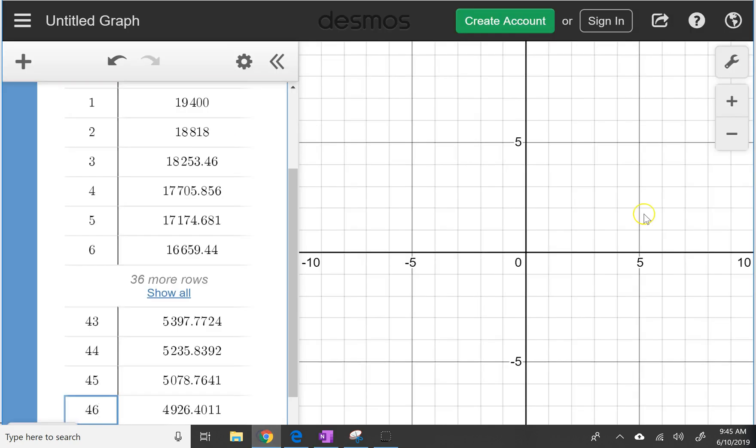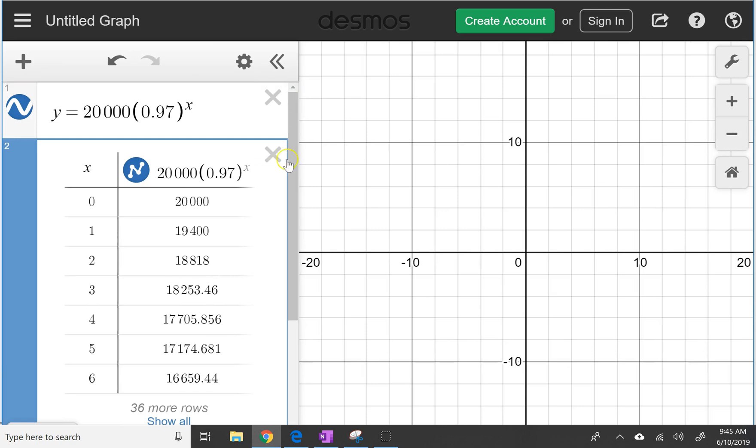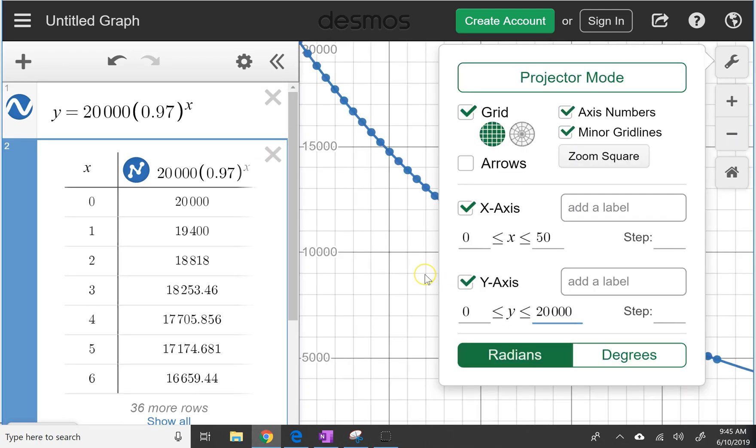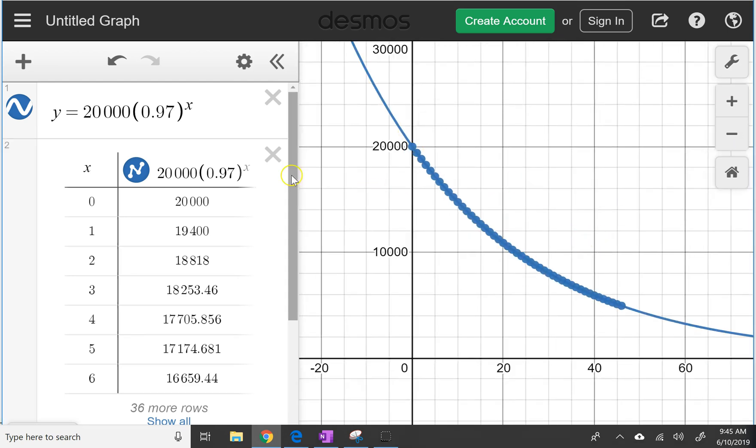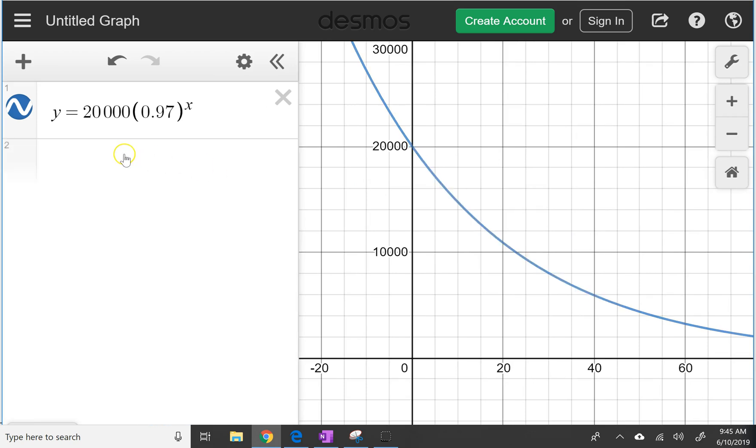And so just want to take a quick second to compare this graph. So I've created a nice window where we can view the graph, and so we can see that's what it's looking like for the depreciation scenario. And since we've already gotten the answer we want from this table, I'm going to take that out.